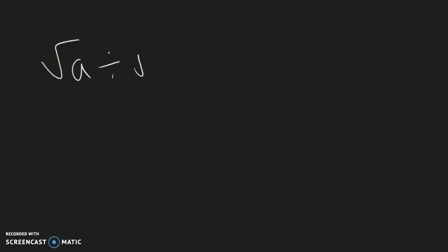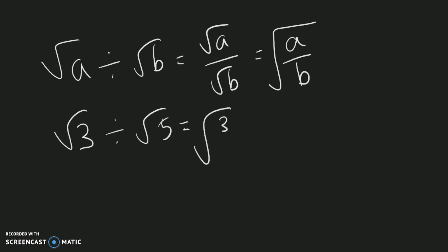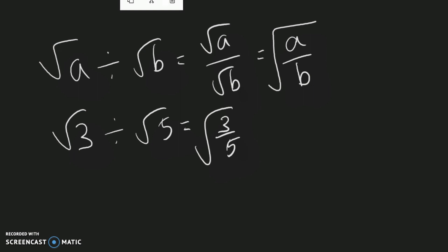The next law: the square root of 'a' divided by the square root of 'b' is equal to the square root of a over b. When there's a square root on top and at the bottom, this simplifies to put everything inside one single square root. So the square root of three divided by the square root of five is equal to the square root of three-fifths.